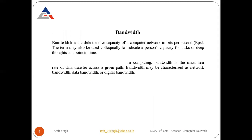The next term is bandwidth. Bandwidth is the data transfer capacity of a computer network in bits per second (bps). In simple language, bandwidth is the capacity of data transfer per second. We can calculate the quantity of bits per second — how many bits can travel in a particular second. In computing, bandwidth is the maximum rate of data transfer across a given path.